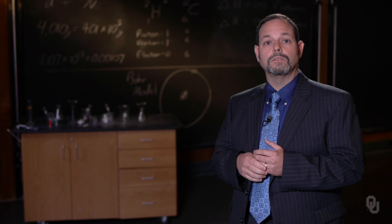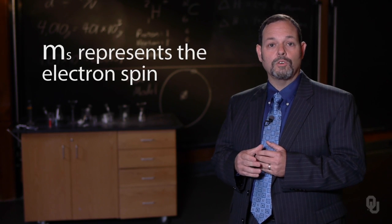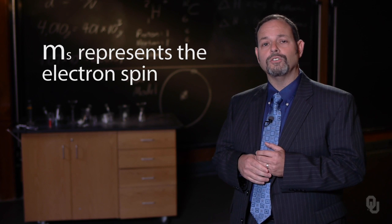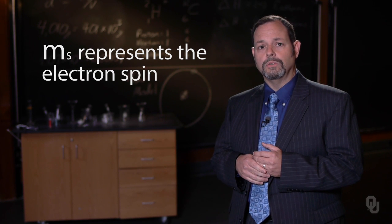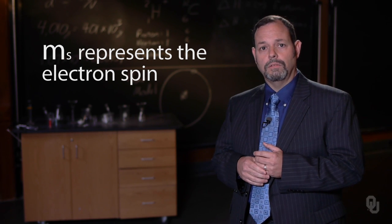Our last quantum number, M sub S, is the electron spin quantum number. It really only has two possible values: minus one-half and plus one-half. When we look at all of this together, it gives us the probable location of an electron based on the electron density map that we calculated by quantum mechanics.